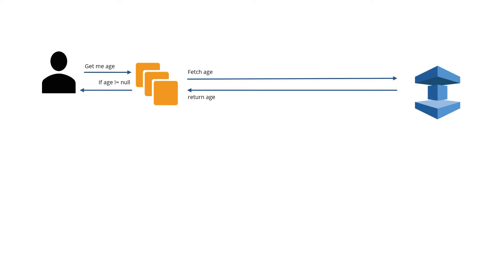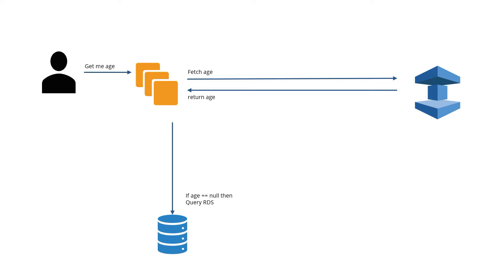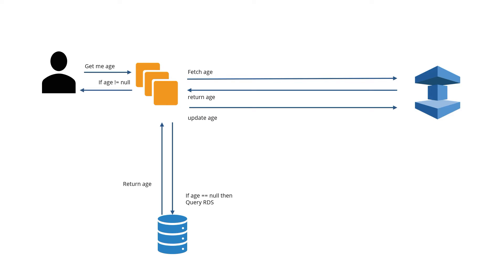For some example, if this age is not available in the cache memory, then what do we do? We hit the database and query it using the user ID — like 'SELECT * FROM table WHERE user_id = XYZ' — and we get the age of the user. Before we return that to the user, we first update this particular key in the ElastiCache and then return it back to the user, so that next time when the user requests this age, instead of hitting the database, we will retrieve it from the ElastiCache.